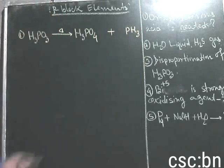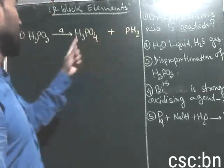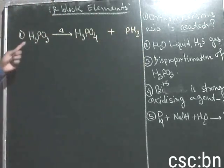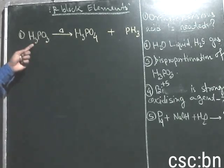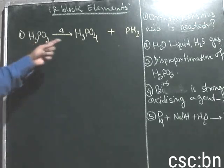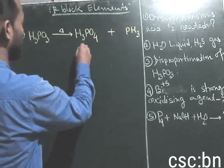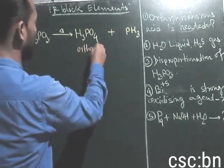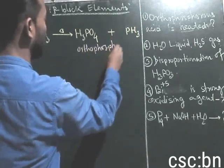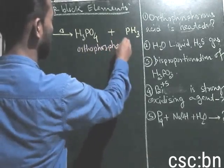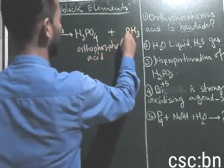This is why phosphine is prepared from it. So H3PO3 — orthophosphorous acid — gives metaphosphoric acid, and it will also yield phosphine.